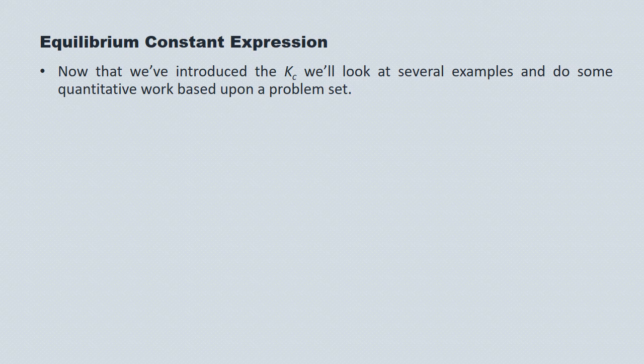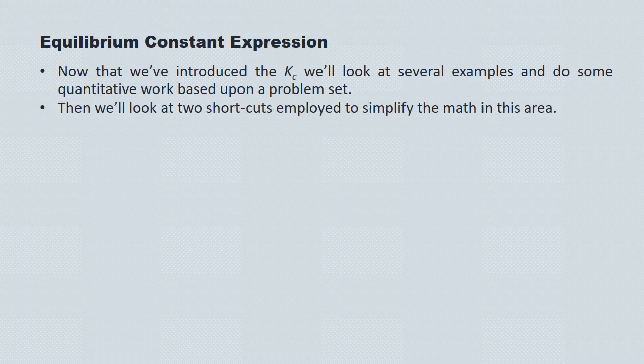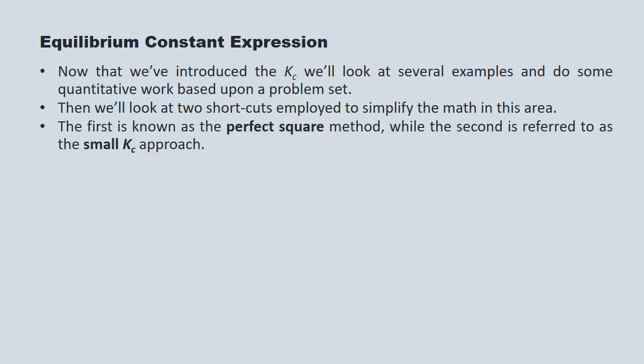Now that we've introduced the Kc, we'll look at several examples and do some mathematics around the concept. We'll look at two shortcuts employed to simplify the math in this area, which can get quite complex. The first is known as the perfect square method, while the second is referred to as the small Kc method.